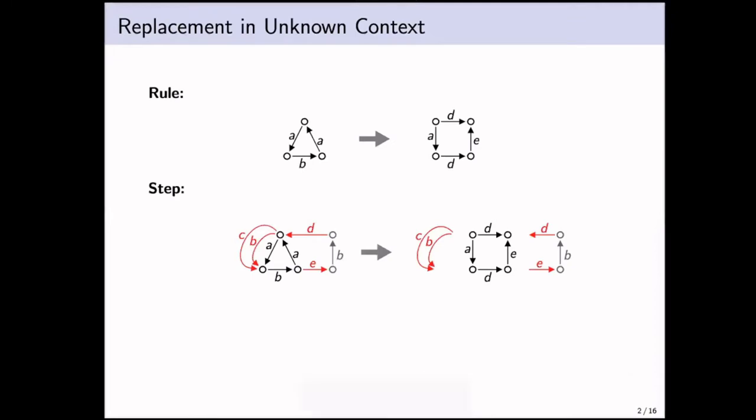Let's start with some very general idea, which is just replacement in unknown context. Not fixing any particular formalism, but just thinking about the concept. What we like to do is be able to replace an occurrence, let's say a triangle-shaped graph as depicted by a square. When you do this in any context, you will have edges incident to your pattern that may be even completely on the pattern, but not part of it.